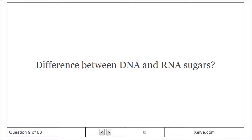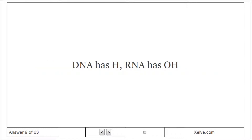Difference between DNA and RNA sugars: DNA has a hydrogen (H) at the 2' position, while RNA has a hydroxyl group (OH).